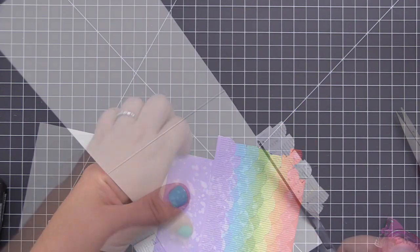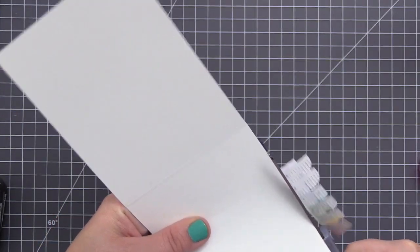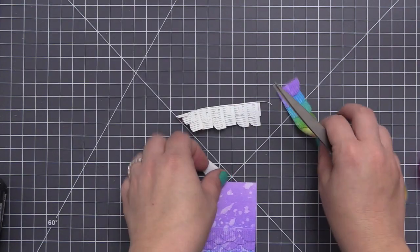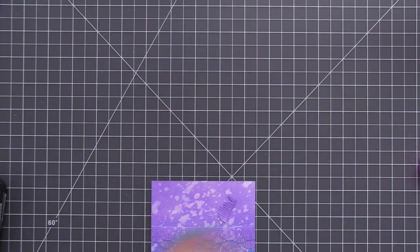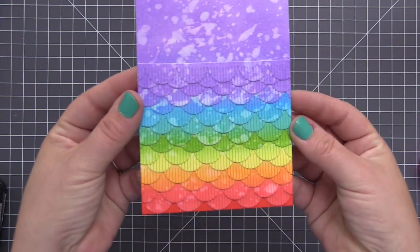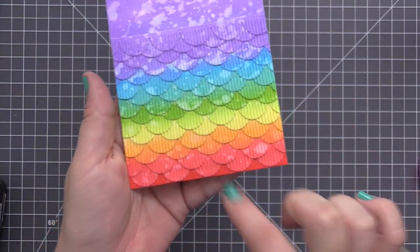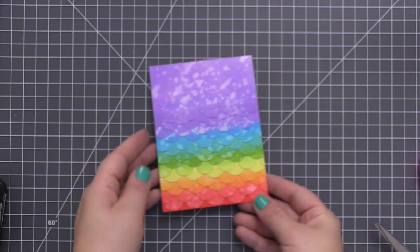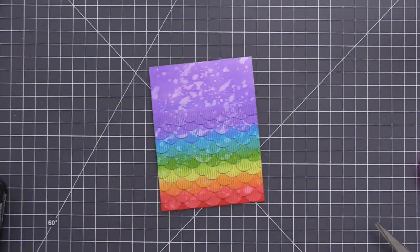So now that I have all of the scallops added on I'm just going to take my scissors and very carefully cut up the side of the card to remove the excess. And then once we do that we're left with this really super fun card design. We have this beautiful rainbow pattern. I love the fringe detail in the scallops—it just adds so much more dimension and texture to the finished card. And then we have this nice area at the top where we can add a sentiment.